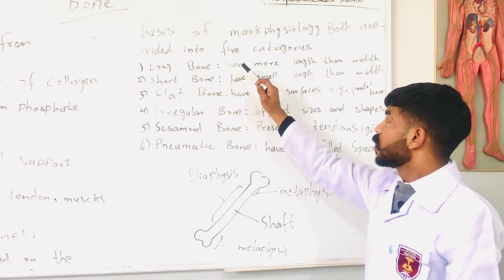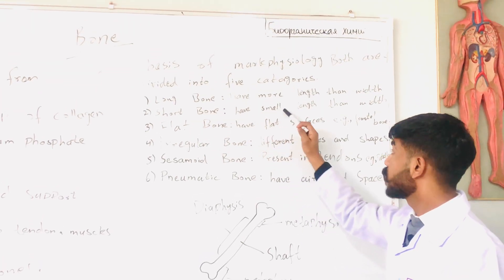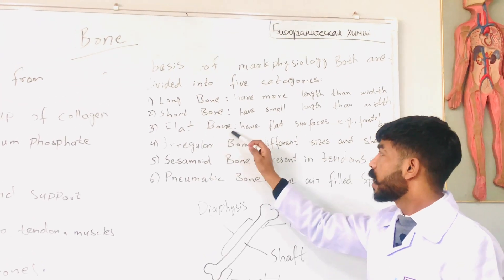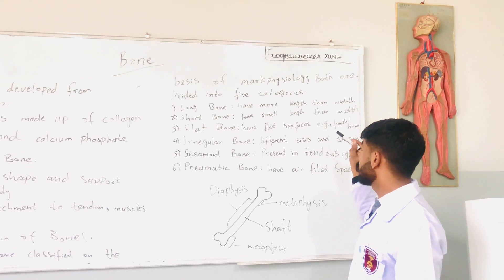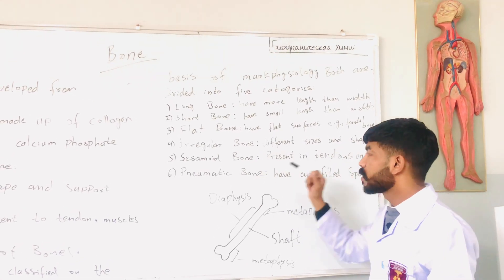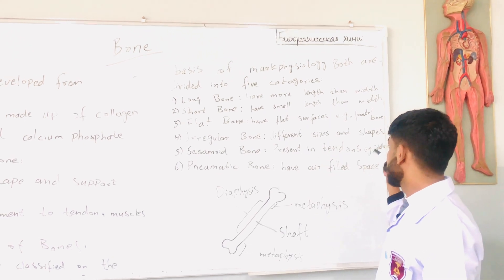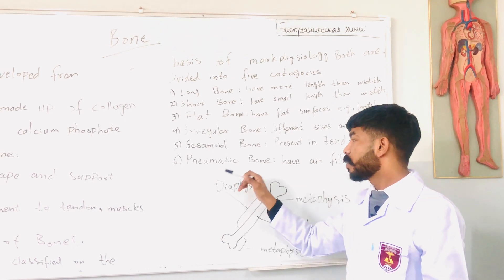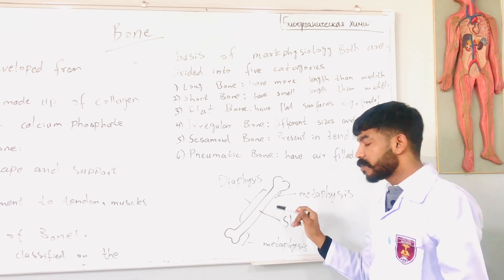Long bones have more length than width. Short bones have smaller length than width. Flat bones have a flat surface, for example the frontal bone. Irregular bones have different sizes and shapes. Sesamoid bones are present in tendons. Pneumatic bones have air-filled spaces.